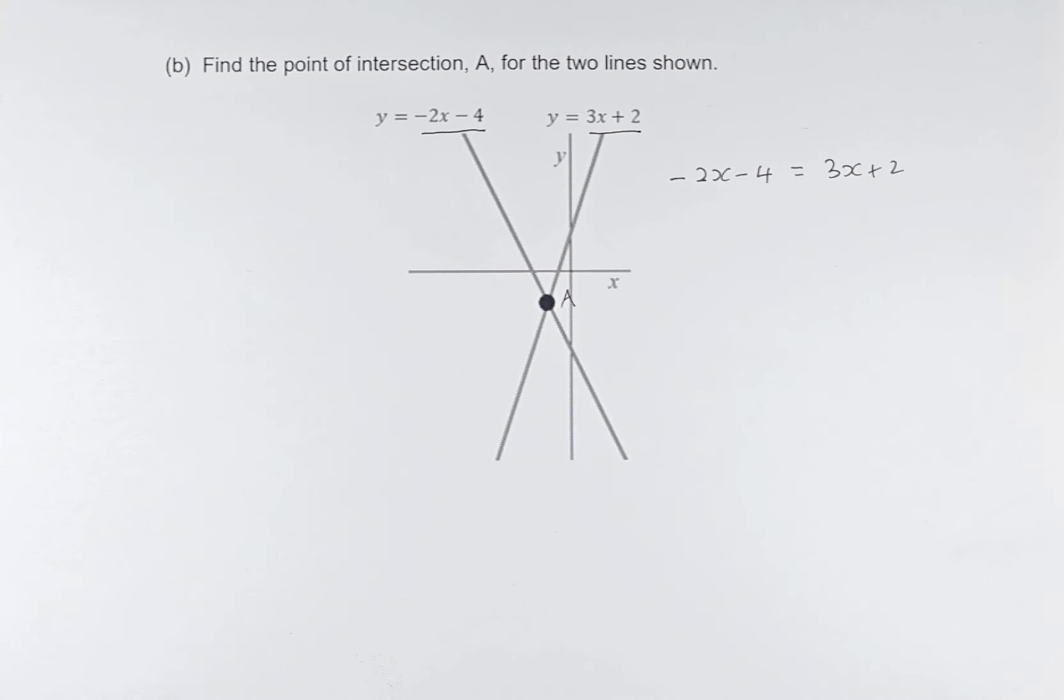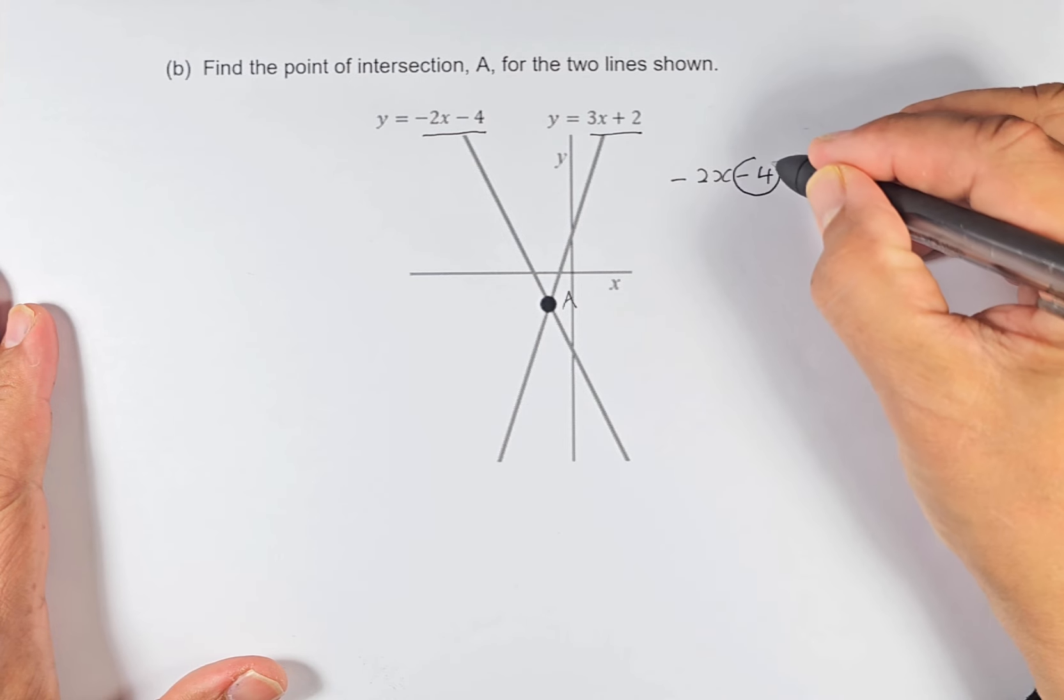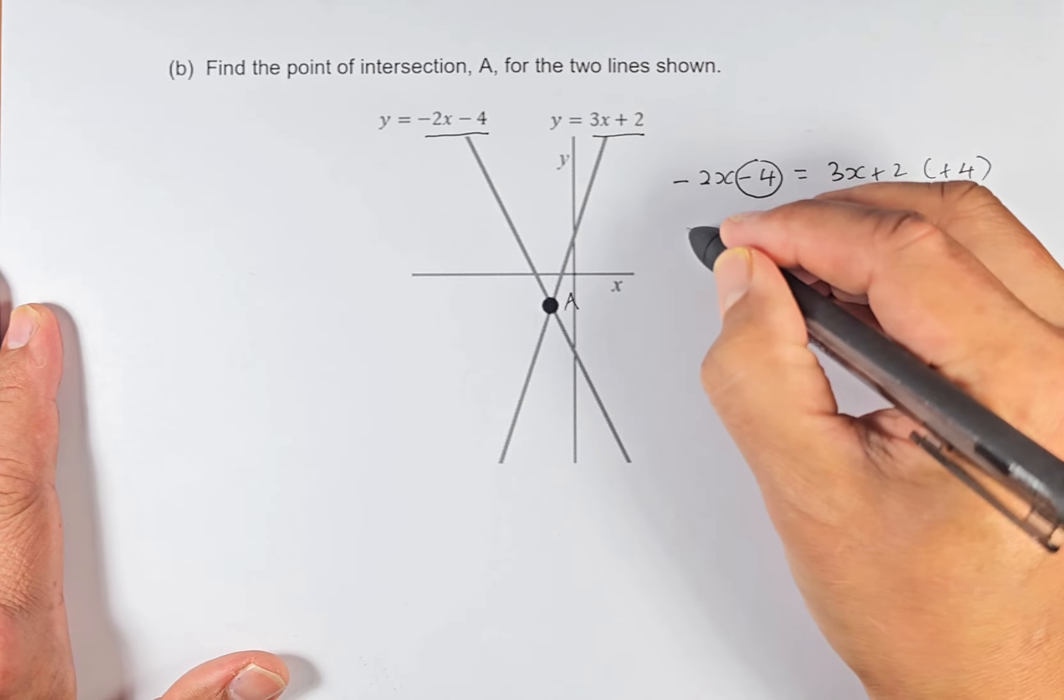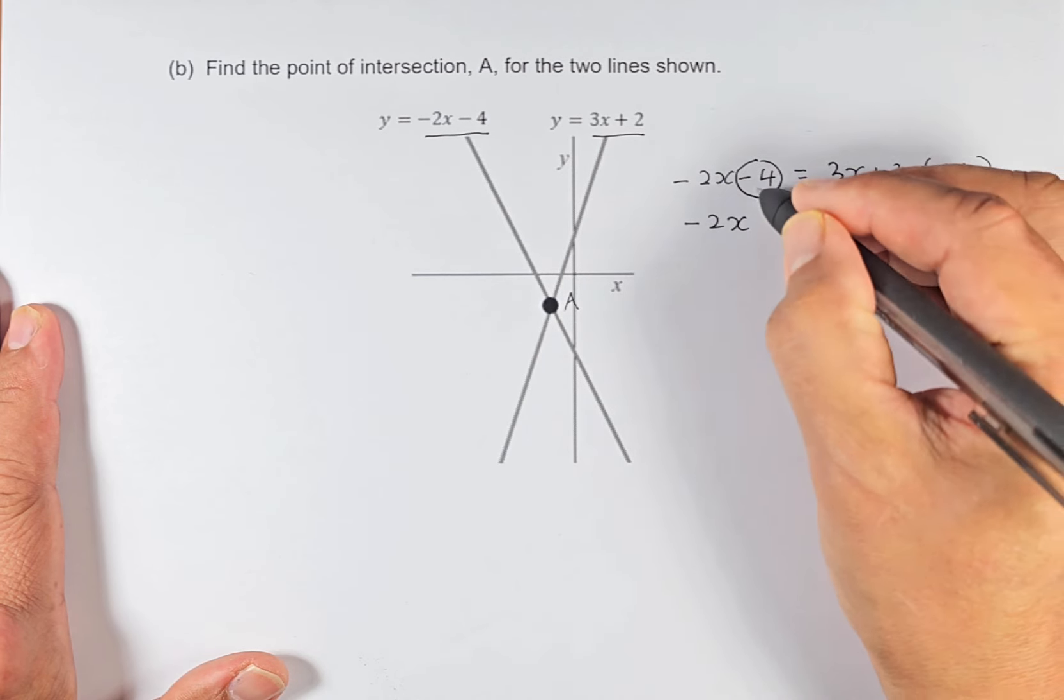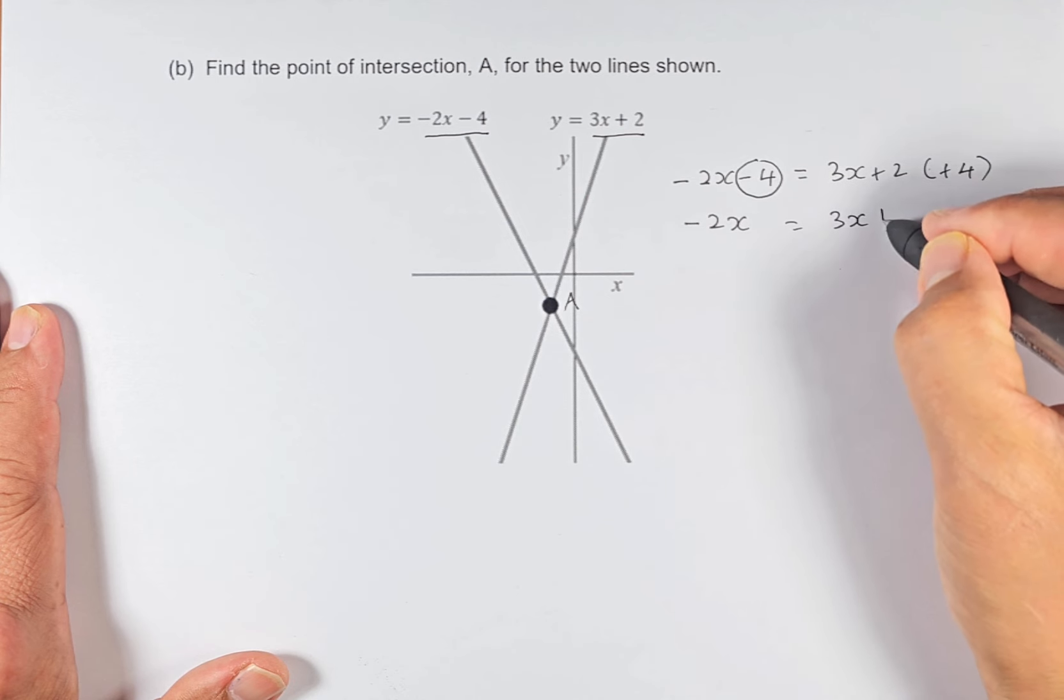Now we're going to solve for the value of x using algebra. To do that, we need to get rid of this -4. We add 4 to both sides of the equation. When we add 4, the equation becomes -2x, because -4 + 4 will cancel out. So we have 3x + 6, because 4 + 2 equals 6.